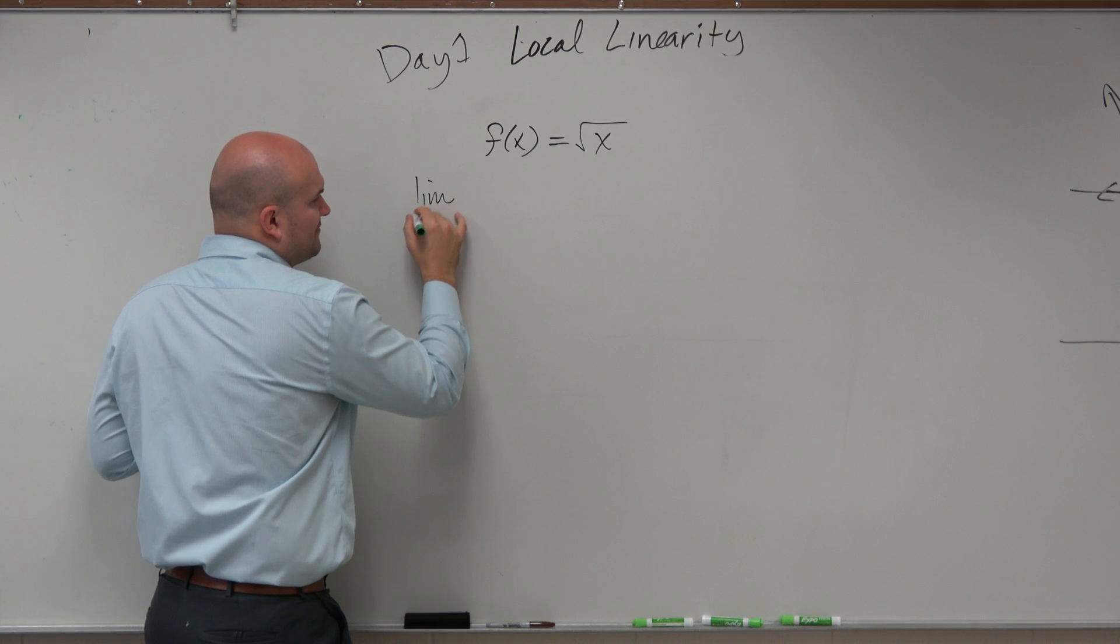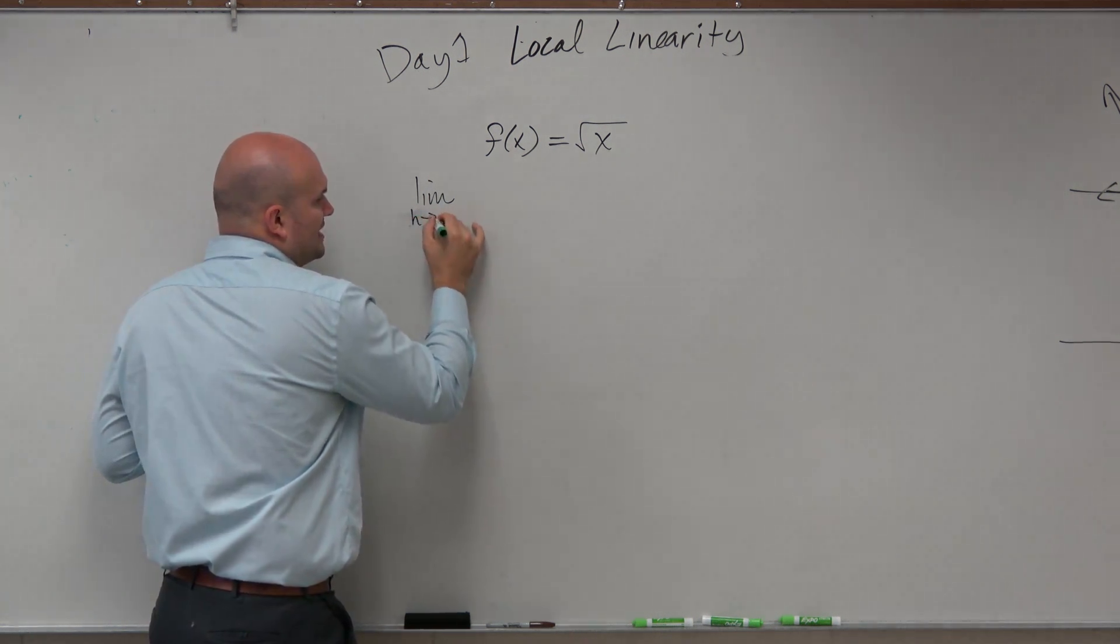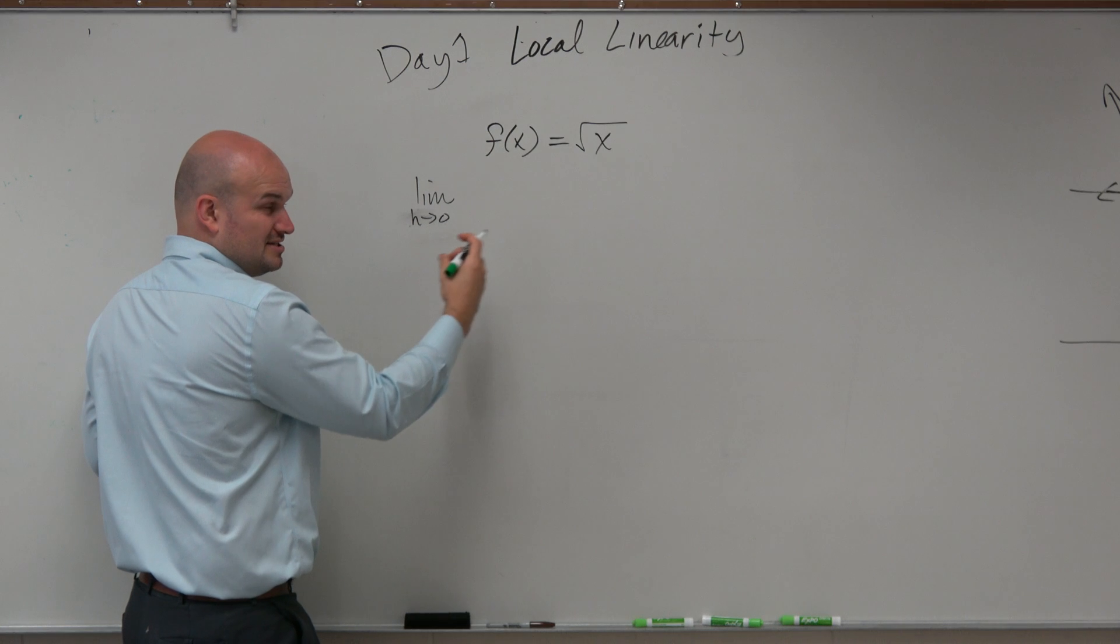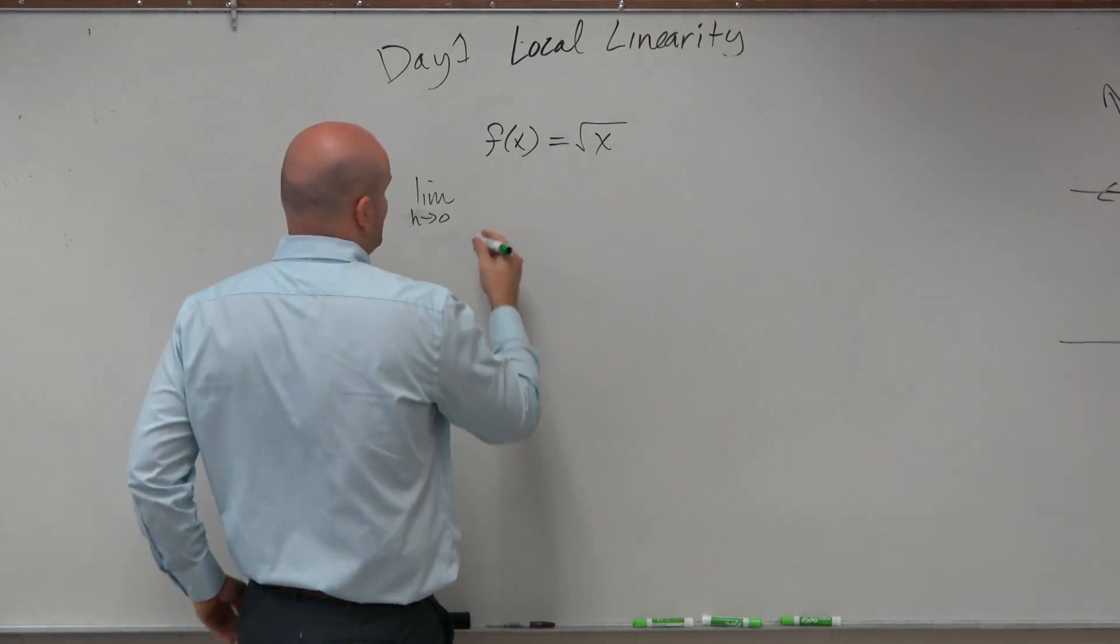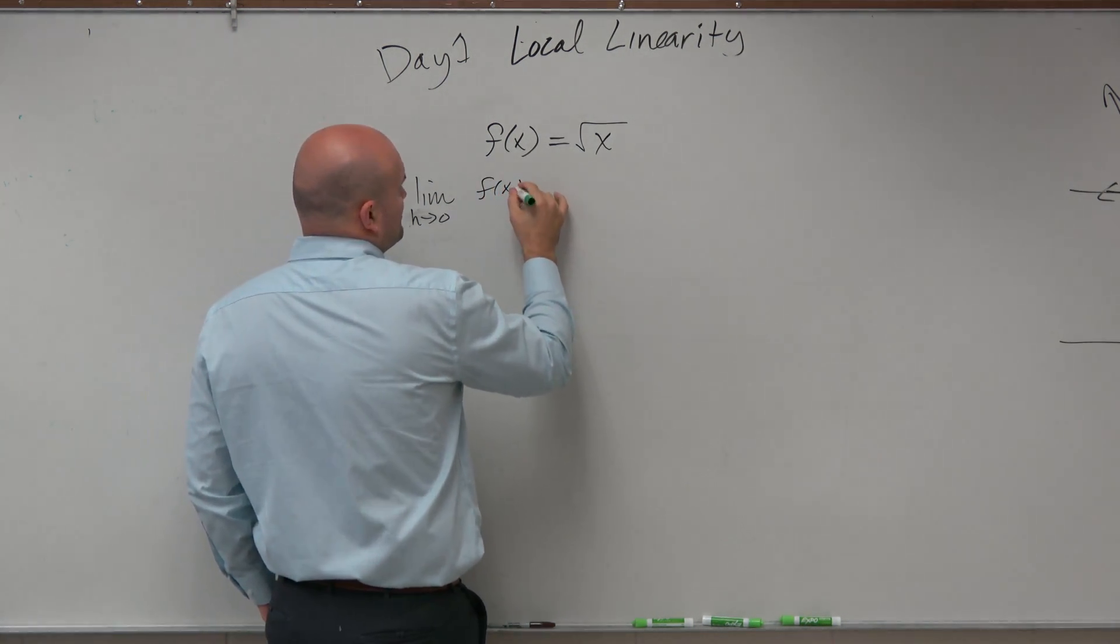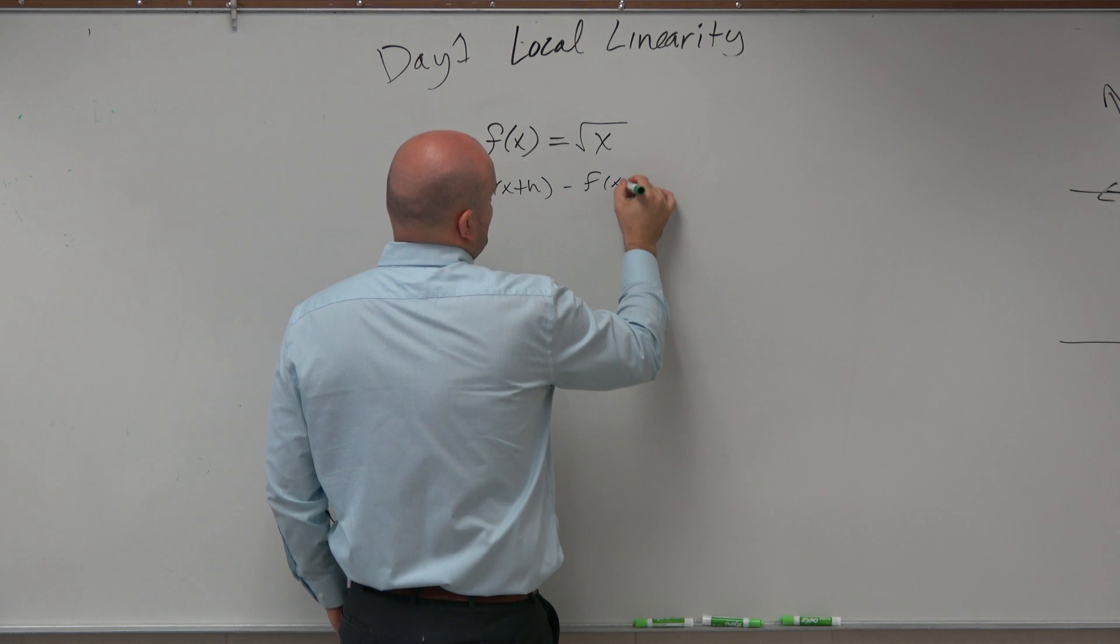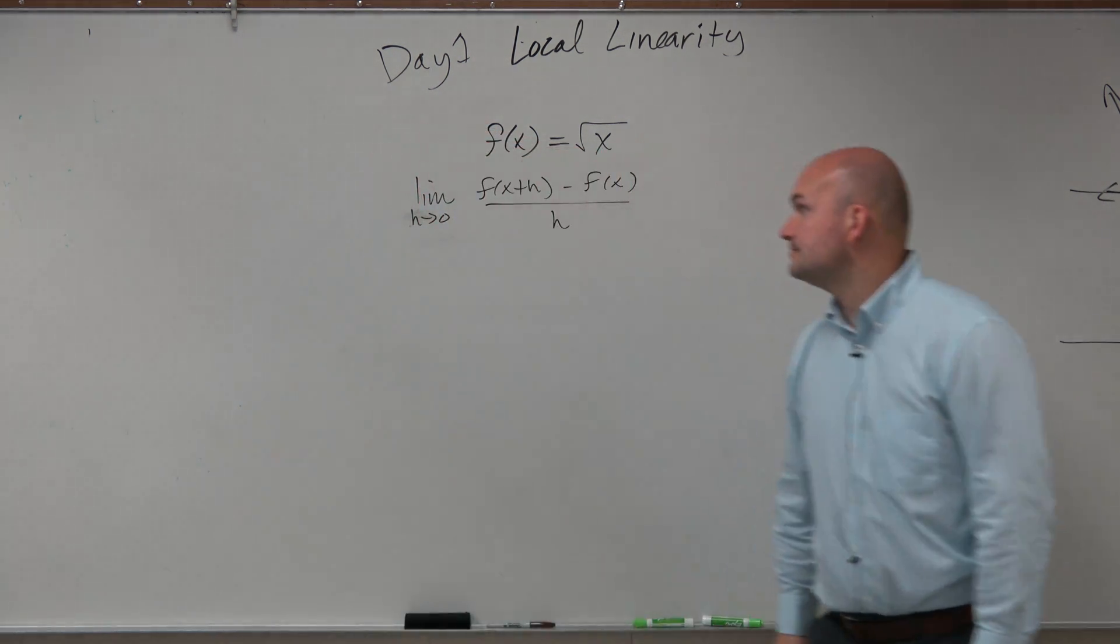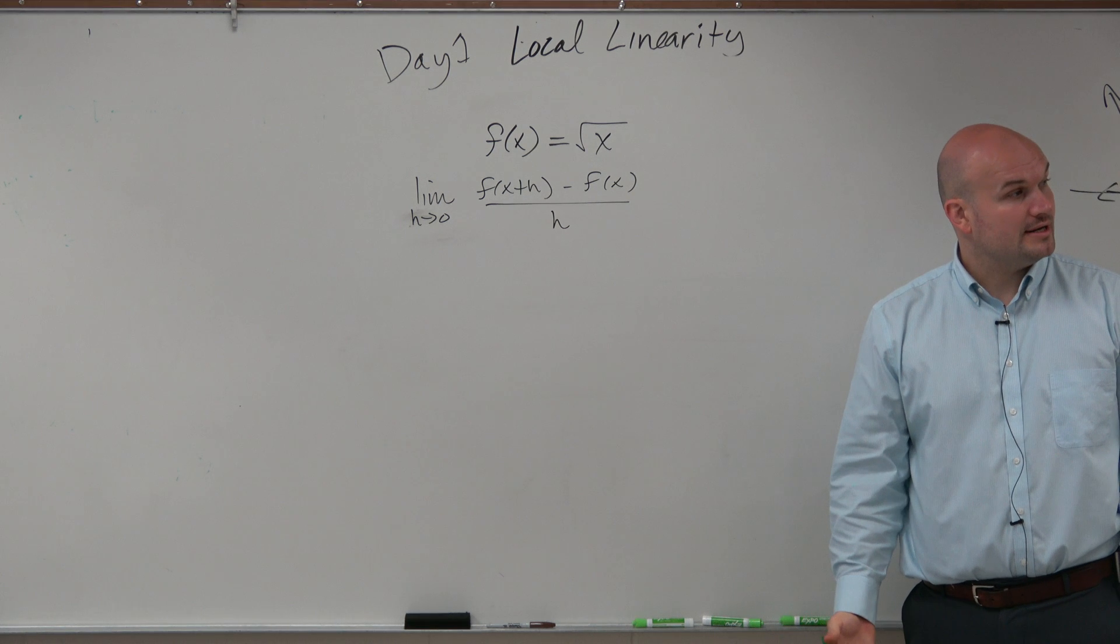So again, setting up our difference quotient as h is going to approach 0. So we want to get closer to h equals 0. We have f of x plus h minus f of x all over h, okay?